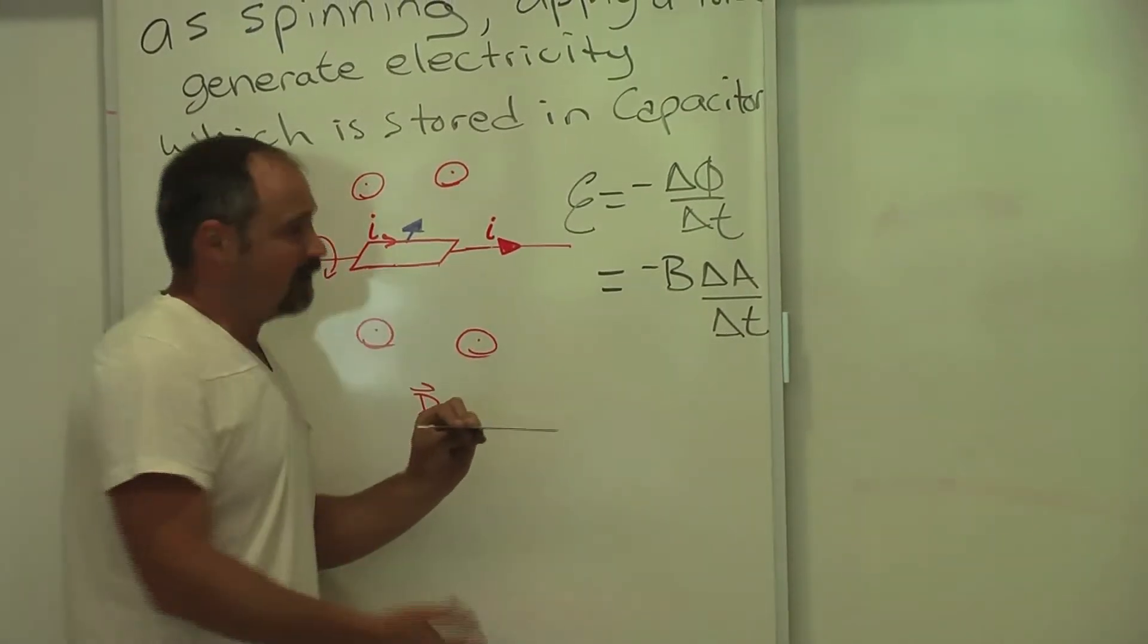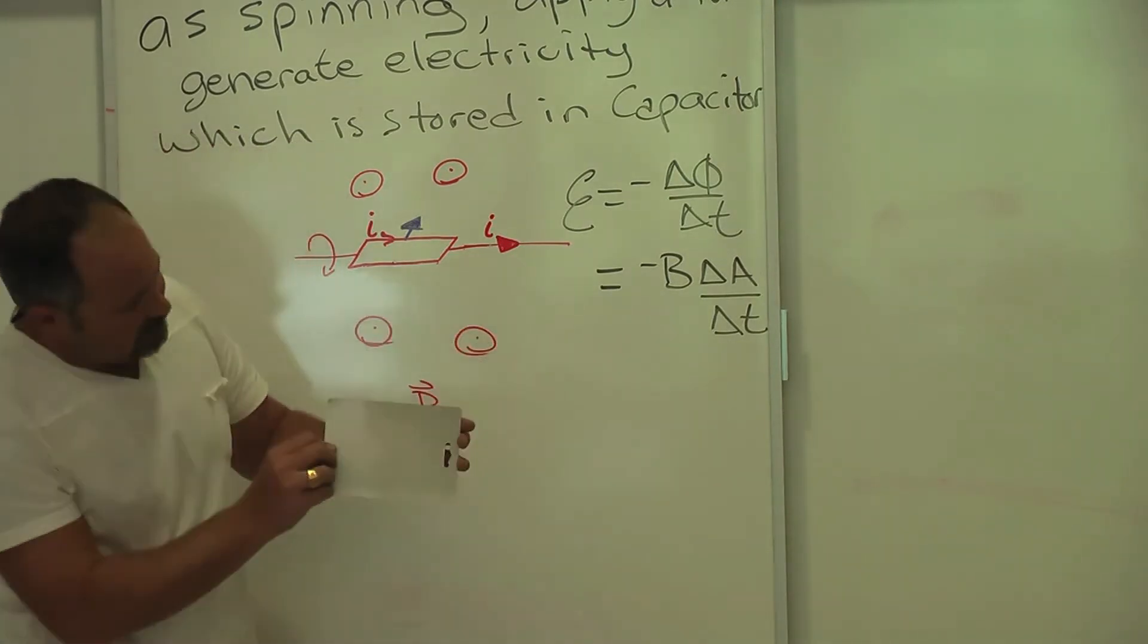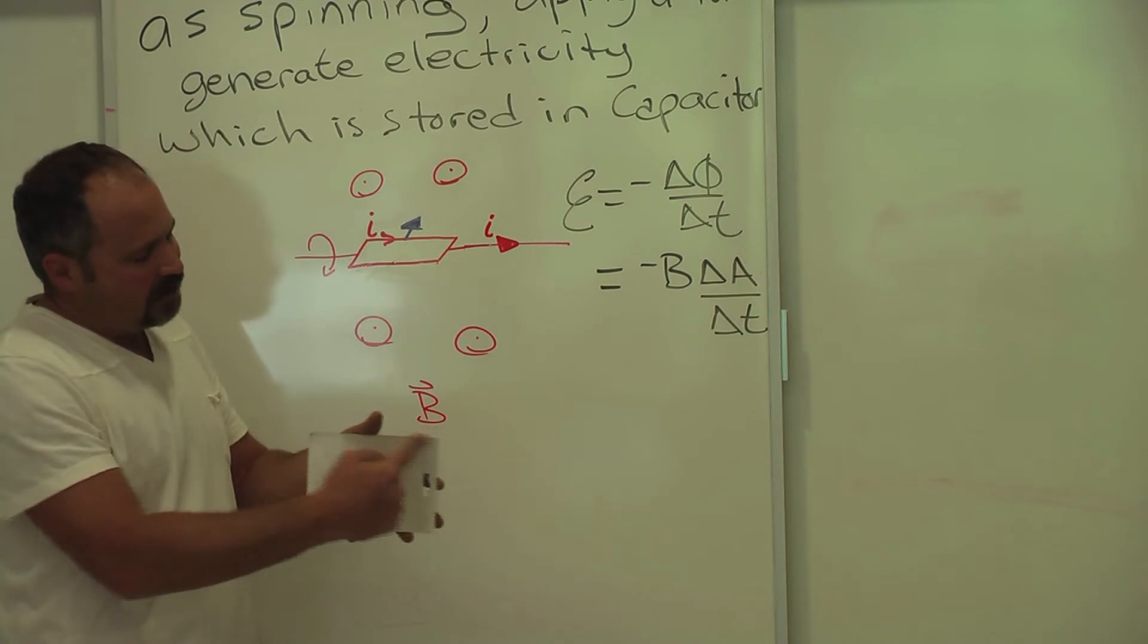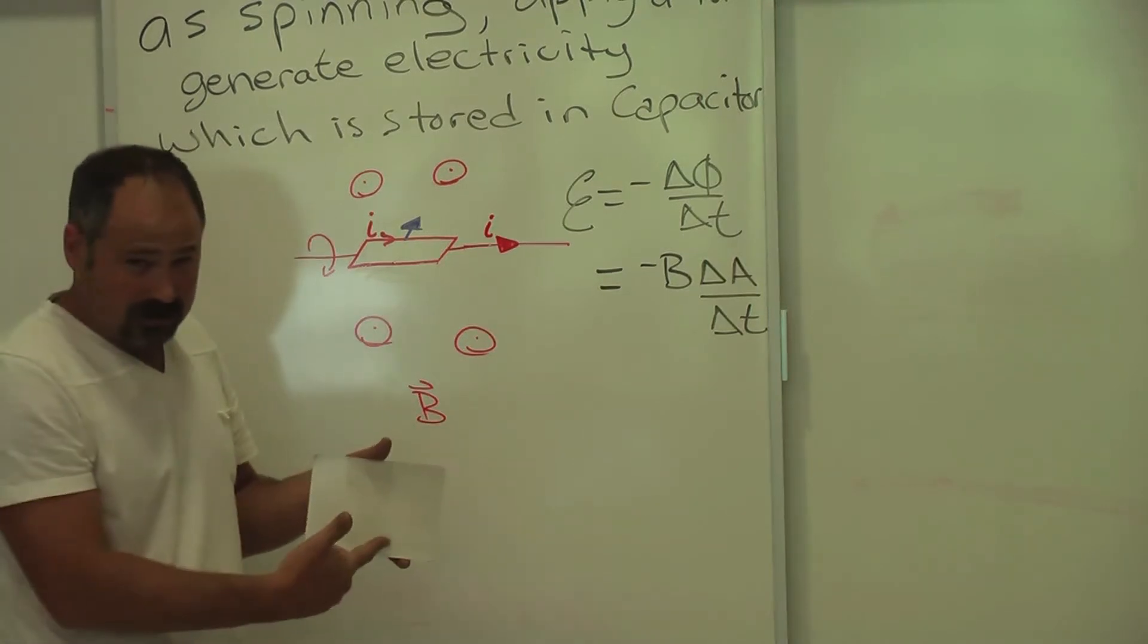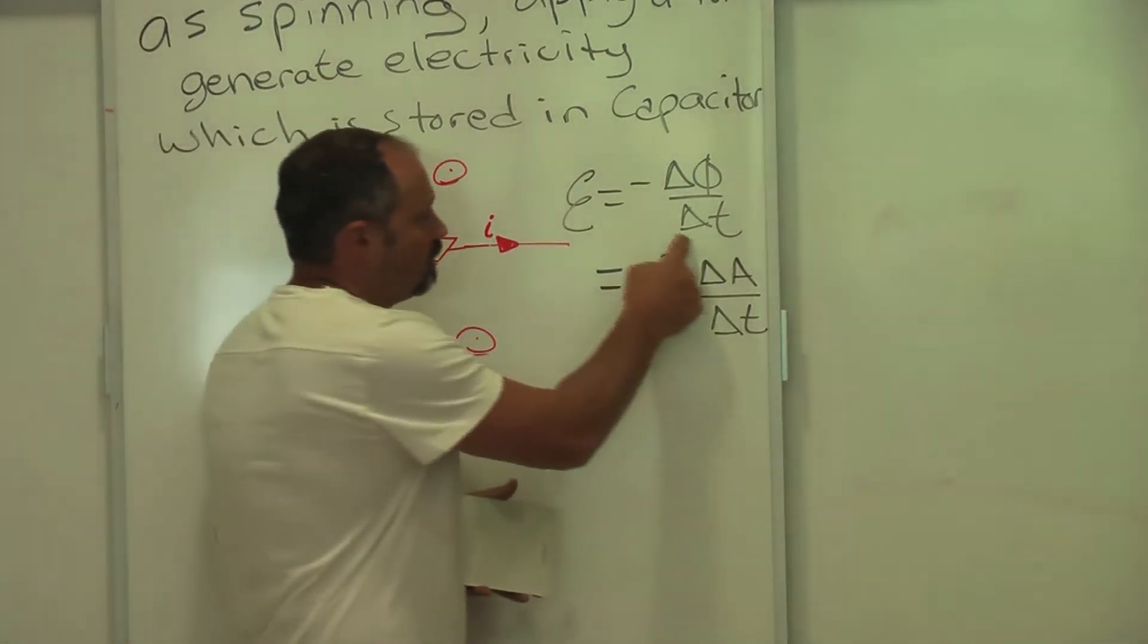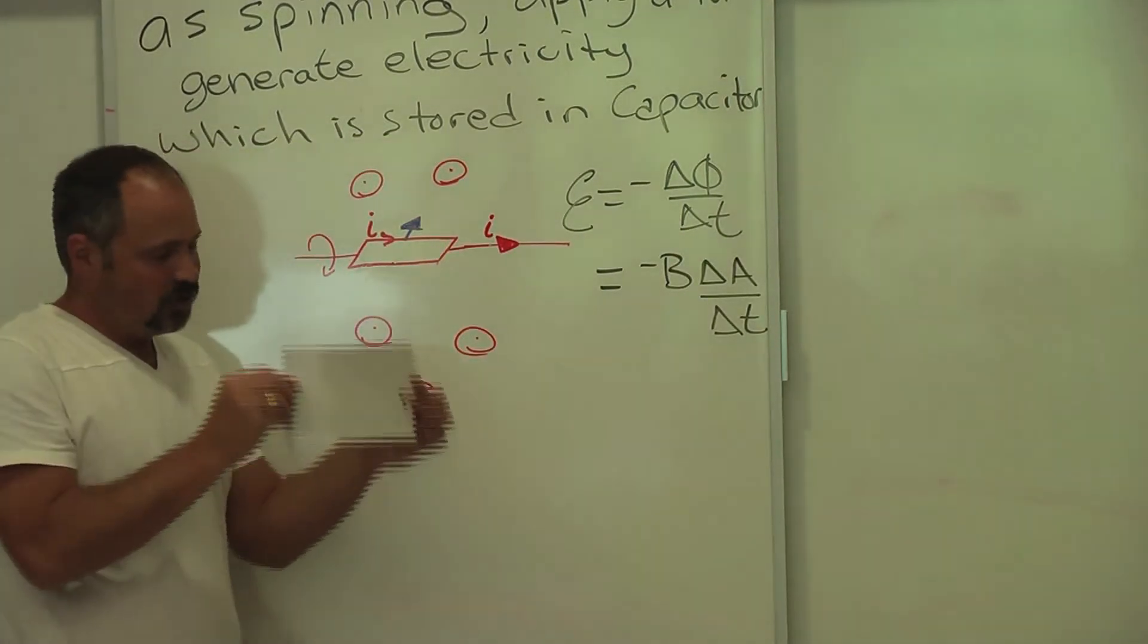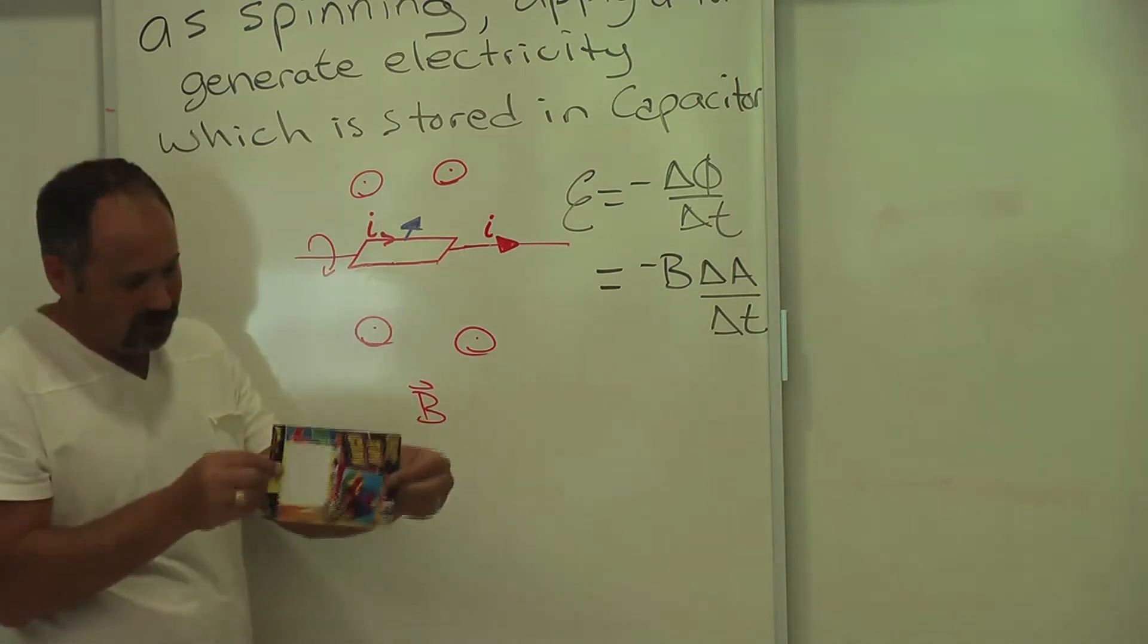And therefore, there is zero flux and zero voltage created. But when it comes in to the direction of the magnetic field, now you have maximum flux, and therefore you're generating a maximum voltage. Notice that it's also over delta T, so it has to be changing with time. So you can't just hold it like this. It has to be moving.